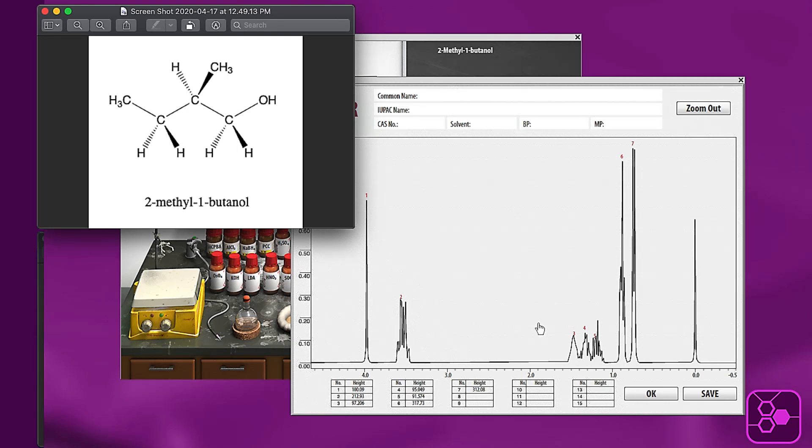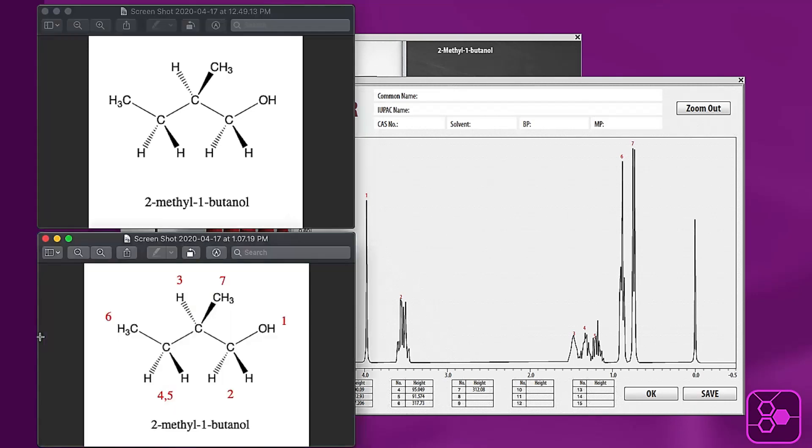Now based on other things you will have learned about splitting as I mentioned, and the shielding and deshielding that occurs, you could go through here and make the assignments of these other peaks. And you should get something that looks like this. So I've just gone ahead and made an assignment with these peaks based on this proton NMR using the zoom ability and using the heights provided in the spectrum to compare to each other.